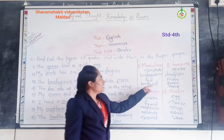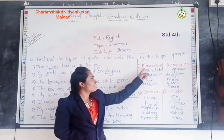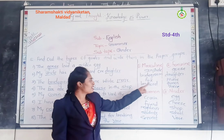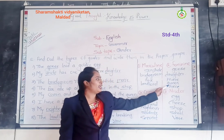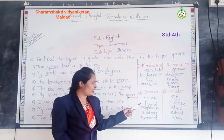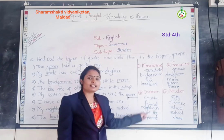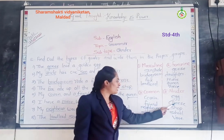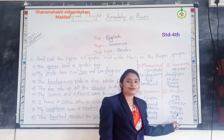Let us recap. Masculine gender examples: sir, uncle, bridegroom, fox, landlord. Feminine gender examples: Buse, daughter, their, queen, niece. Common gender examples: cousin, friend, neighbor, student, servant. Neuter gender examples: A, cheese, shop, school, and best. These are all examples of each gender type.